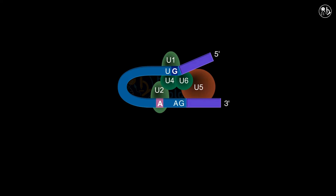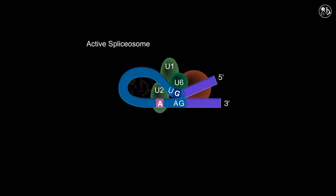After U1 and U2 are brought together, U4 is released. This release results in the formation of an active spliceosome, which removes the intron from between the two adjacent exons. Cleavage first occurs at the 5' GU, separating intron 1 from exon 1. The 5' GU forms a covalent bond with the last adenine in the branch point sequence. This loop structure is a lariat.